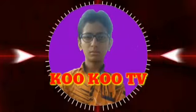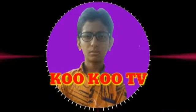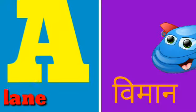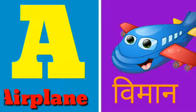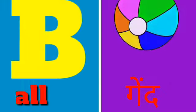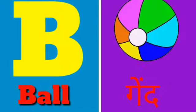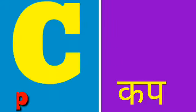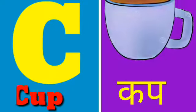1. A for airplane, airplane means viman. B for ball, ball means gend.